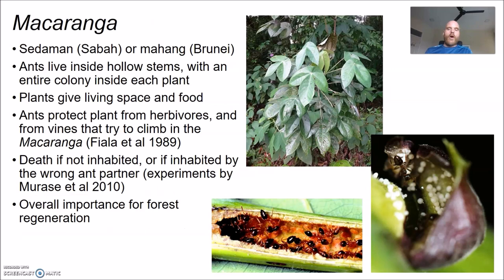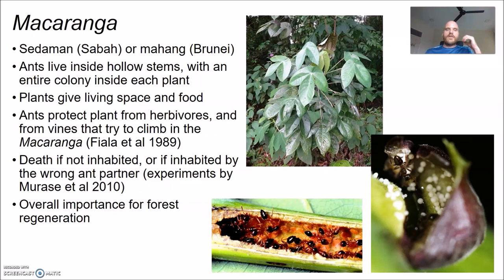The most common group of ant-inhabited plants are the Macaranga — known as Sidaman in Sabah or Mahang in Brunei. Ants live inside the hollow stems of these plants. Sometimes the plant grows its stems already hollow; sometimes there's soft pith inside that the ants hollow out to make a cavity. The plants also provide food: a recurved stipule on the plant stem contains food bodies, and Crematogaster ant workers collect these food bodies. So the plants give living space and food.